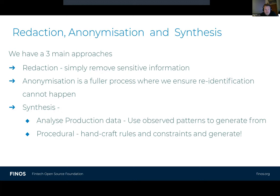We've got three main approaches. Redaction is simply removing sensitive information, but you have the risk of re-identification. Anonymization is a much fuller process that ensures re-identification cannot happen, and there's tooling available for that. Or we go to synthesis: you can do it procedurally by handcrafting rules and generating, or you analyze production data, observe the patterns, and generate from there. That's roughly where we're at between DataHelix and DataHub — DataHub leans toward the analysis side, and DataHelix is much more the procedural side.